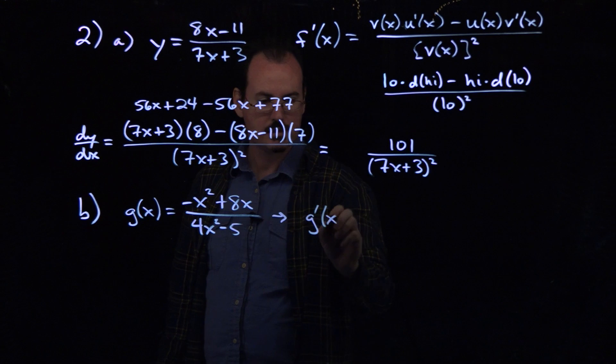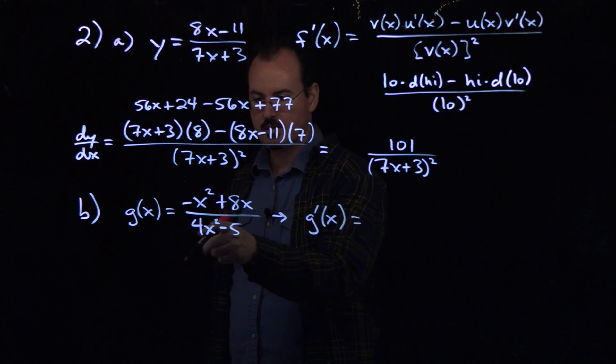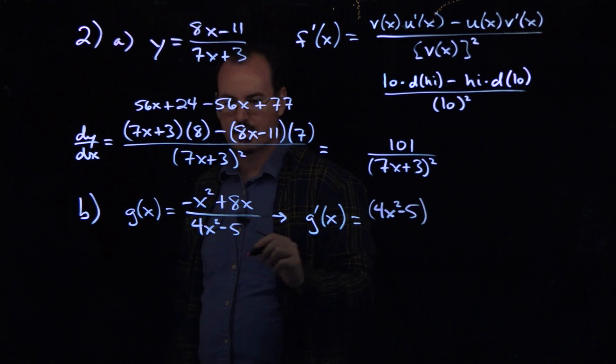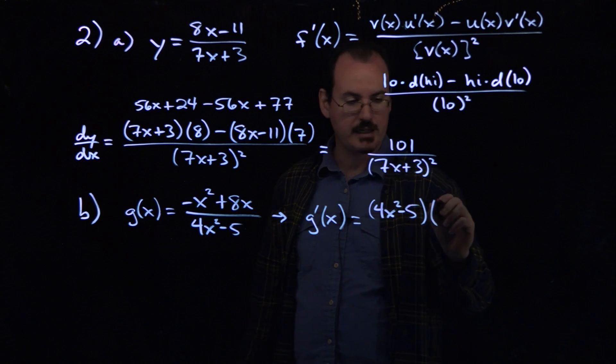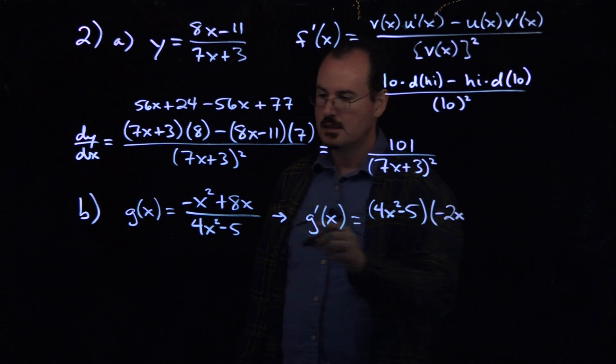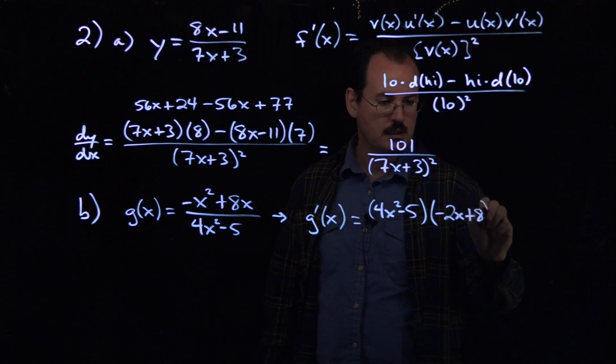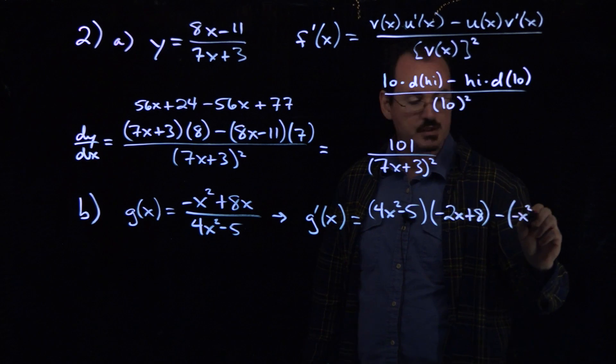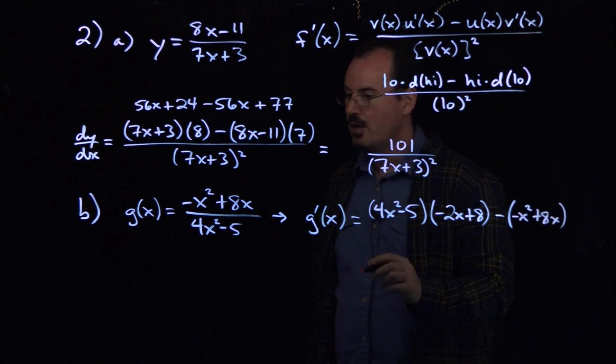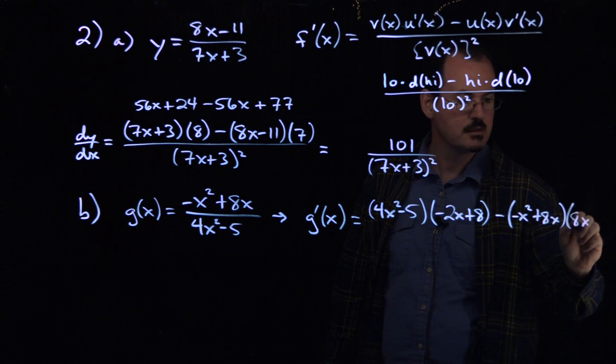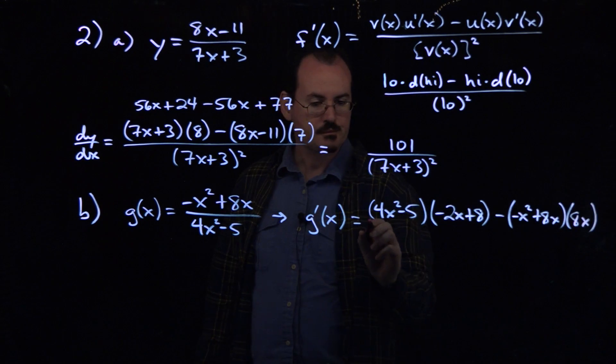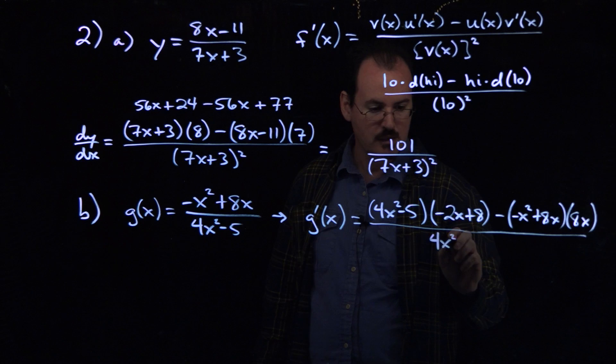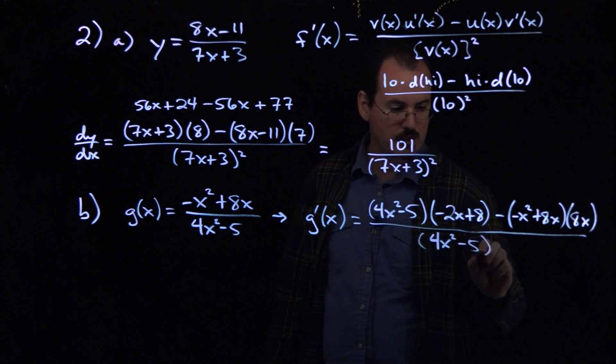Okay, so we'll just jump right in and use the quotient rule on this one. G prime of x, so low d high, so the low function 4x squared minus 5, times the derivative of the top function, is going to be minus 2x plus 8, minus high d low, so this is negative x squared plus 8x. This is the derivative of the bottom function, which is just going to be 8x. All this divided by the bottom function squared, so 4x squared minus 5, whole thing squared.